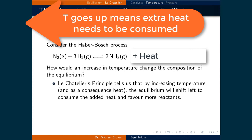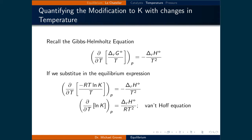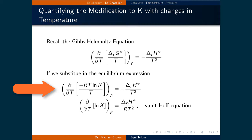We've said that changing the temperature is the only way to change K for a given reaction, so let's quantify how K changes with varying temperature. Recall the Gibbs-Helmholtz equation, which is the partial differential with respect to temperature at constant pressure of the standard change in Gibbs free energy of the reaction divided by the temperature, equal to the negative of the standard change in enthalpy of the reaction divided by T squared. Substituting in the equilibrium expression, we get the partial differential with respect to temperature at constant pressure of negative RT ln K divided by T, still equal to the negative of the standard enthalpy of the reaction divided by T squared. The T's cancel on the left-hand side, and moving negative R to the right gives us the partial differential of ln K with respect to temperature equal to the standard enthalpy of the reaction divided by RT squared.